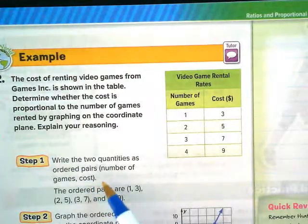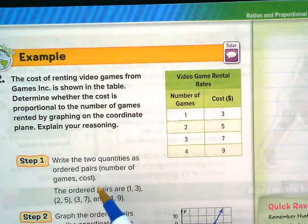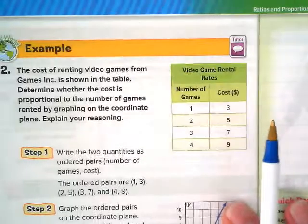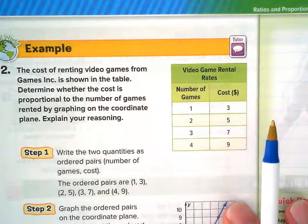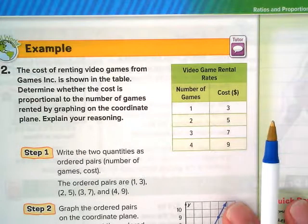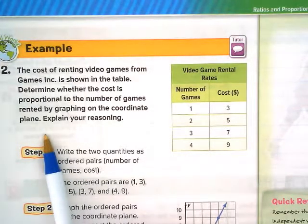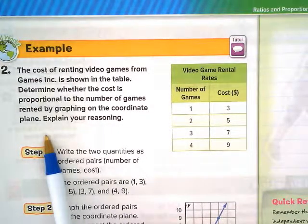Let's look at example two at the top of the page. The cost of renting video games from Games Inc. is shown on the table. Do people still rent video games? Yeah, GameFly. Are these prices reasonable? Determine whether the cost is proportional to the number of games rented by graphing on the coordinate plane. They've done this graphing for us, so we're just going to look at this one.